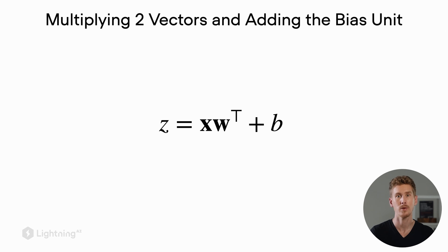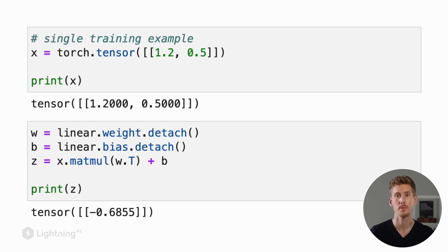We can express this by a dot product or matrix multiplication. So how we can then compute the net input using this linear layer is by a matrix multiplication between w and x and adding b to it.